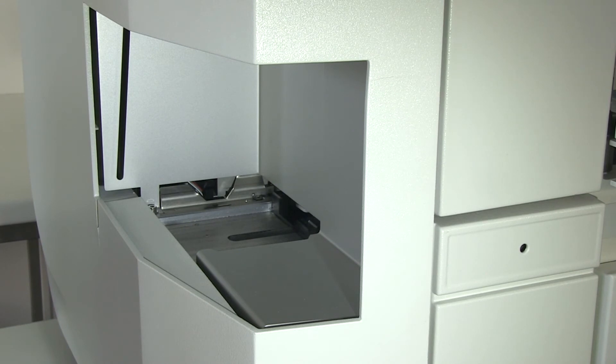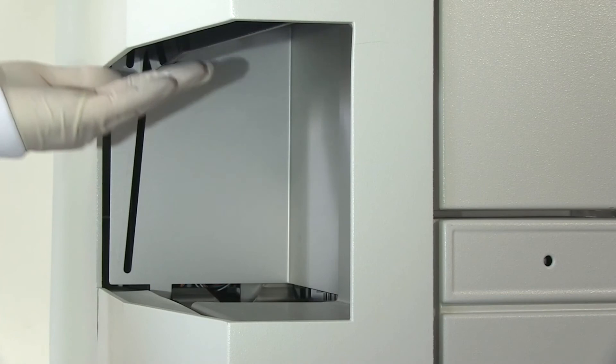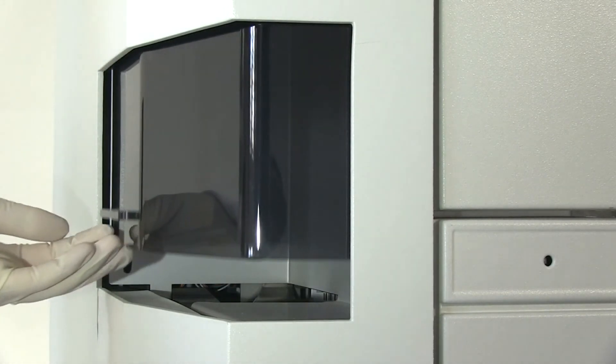Wait until the carriage returns to the loading position before loading the next microplate or closing the cover. To close the cover, move it upwards to unhinge it and then downwards to close it.